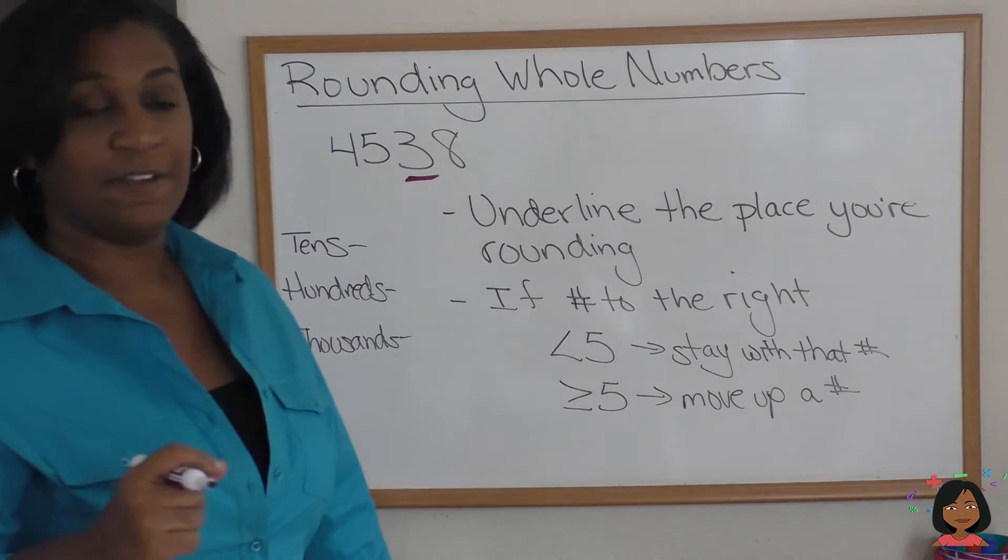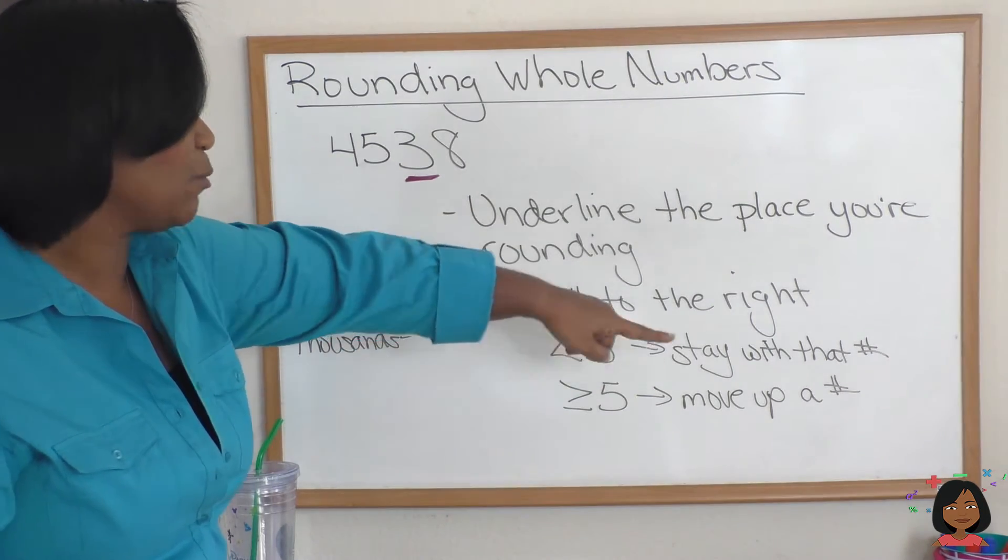Three is in the tens column. Now, part two, if the number to the right is less than five, we're going to stay with that number we underlined. If it's greater than or equal to five, then we're going to move up a number. Let's take a look. So we highlighted the three, because that's in the tens column. We're going to look to the right. That number is greater than or equal to five. So we're going to move up a number.